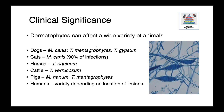Dermatophytes can affect a wide variety of animals, including people. In dogs, we most commonly see Microsporum canis, Trichophyton mentagrophytes, and Trichophyton gypseum. In cats, 90% of infections are due to Microsporum canis. In horses, we see Trichophyton equinum; in cattle, Trichophyton verrucosum; in pigs, Trichophyton mentagrophytes and Microsporum nanum. In people, there's a variety of species involved depending on the location of the lesions.